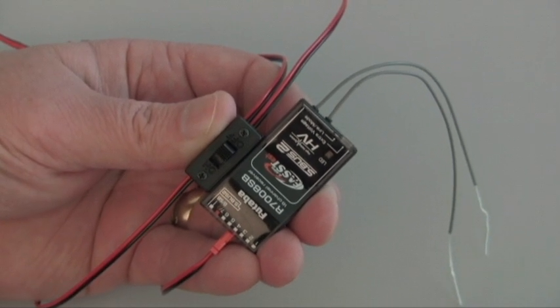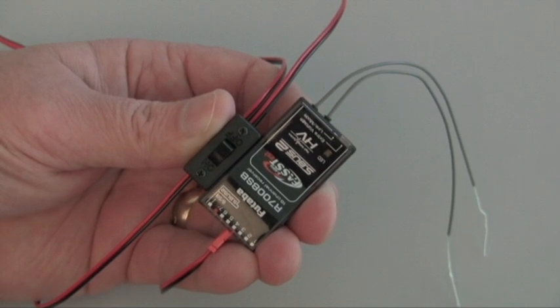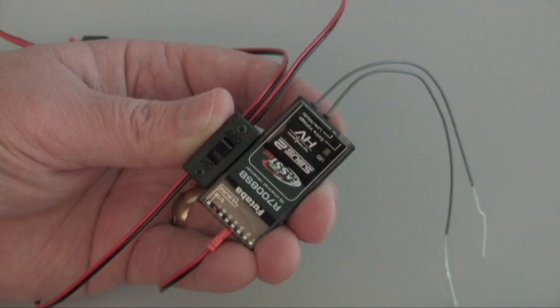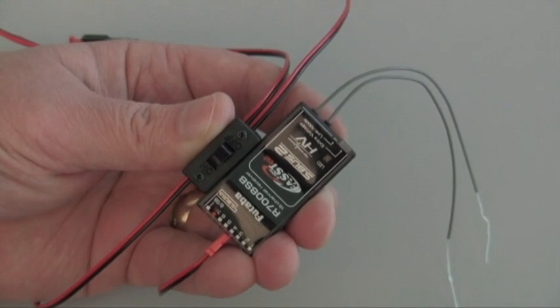A few of you have been asking lately how to link two R7008SB receivers to your 18MZ so that you can have 16 proportional PWM channels. So let's go over how to do that.